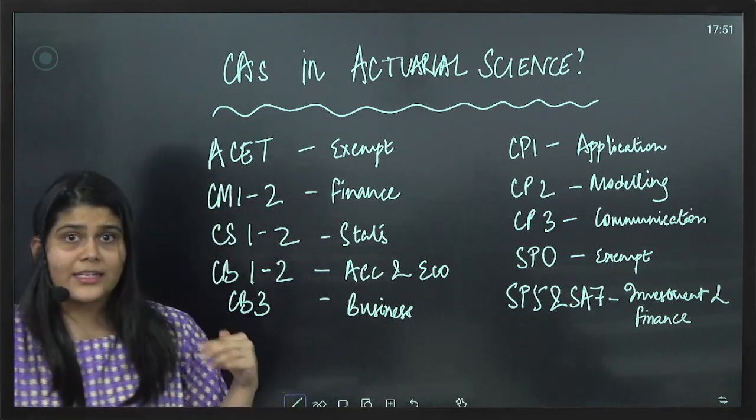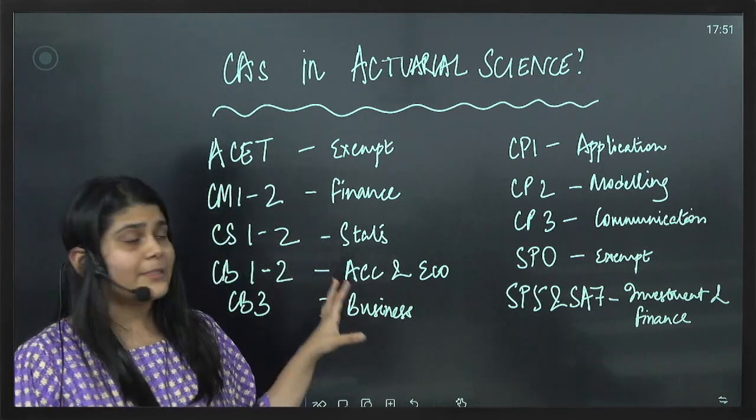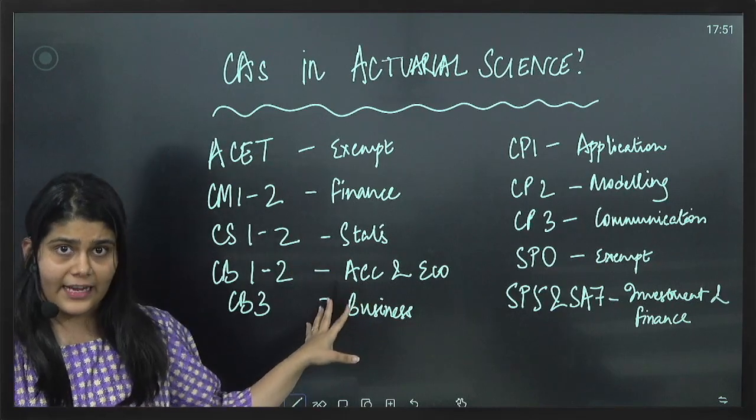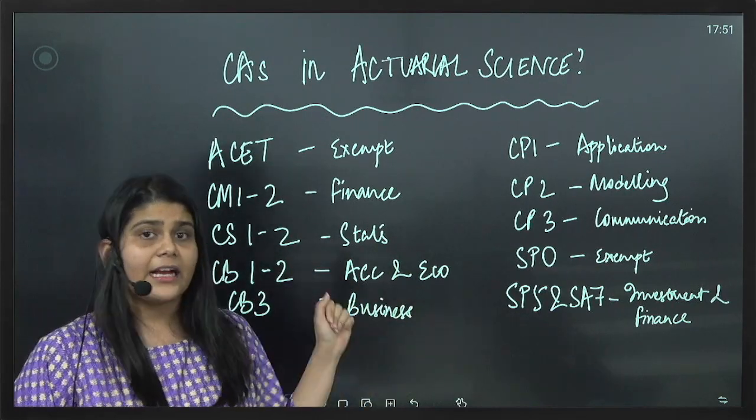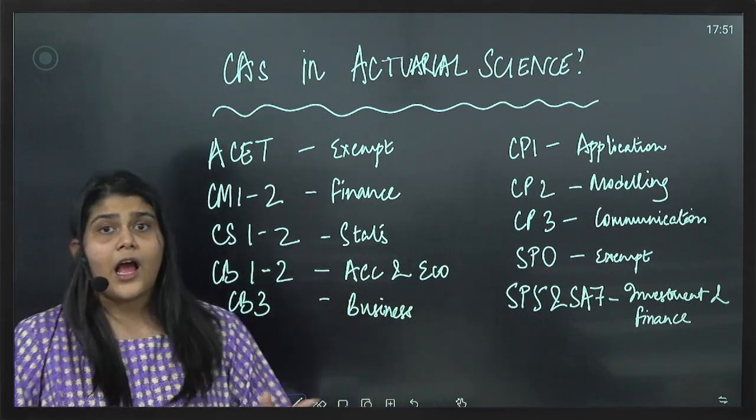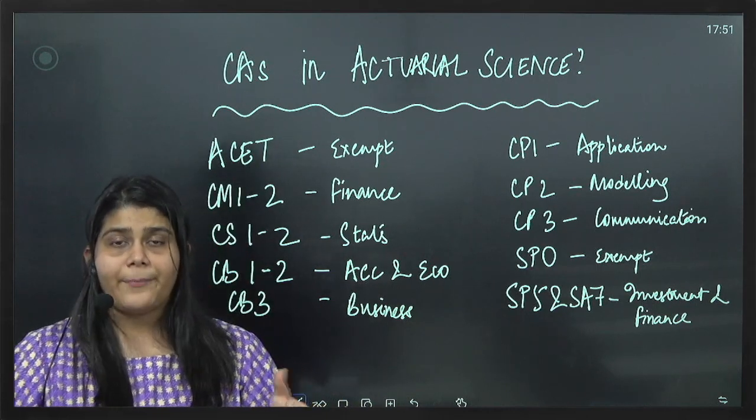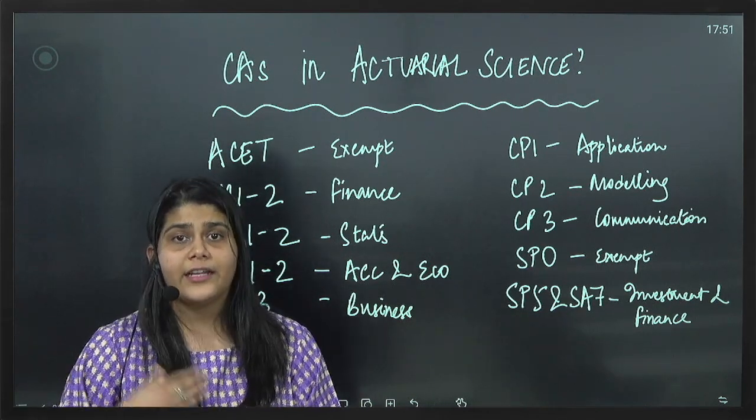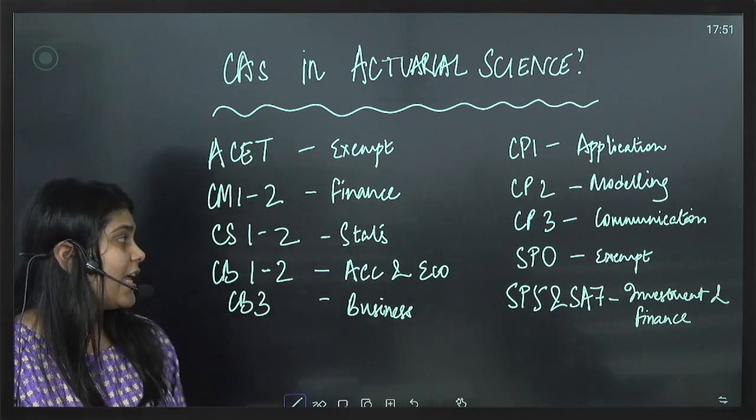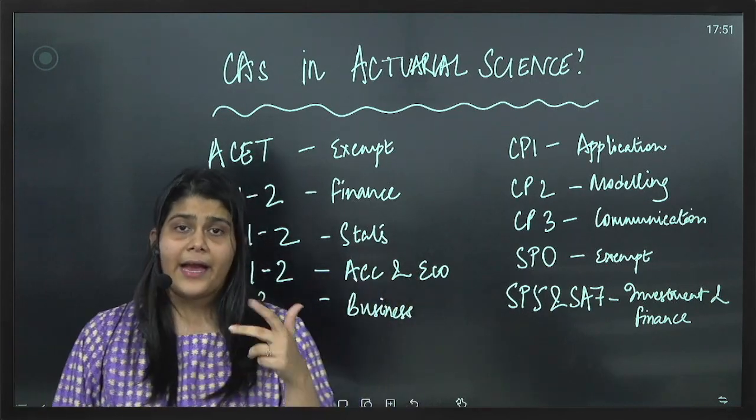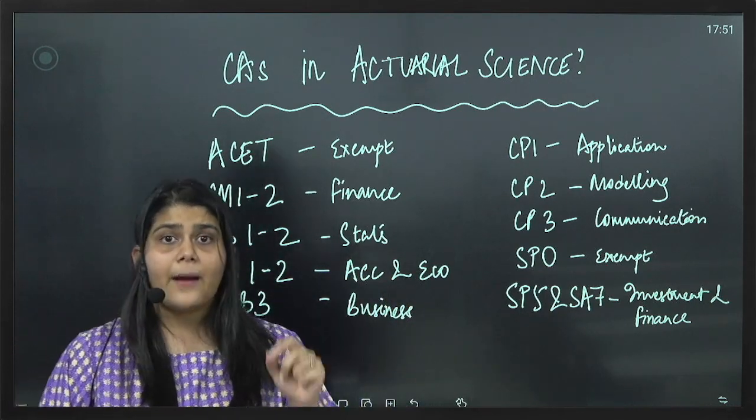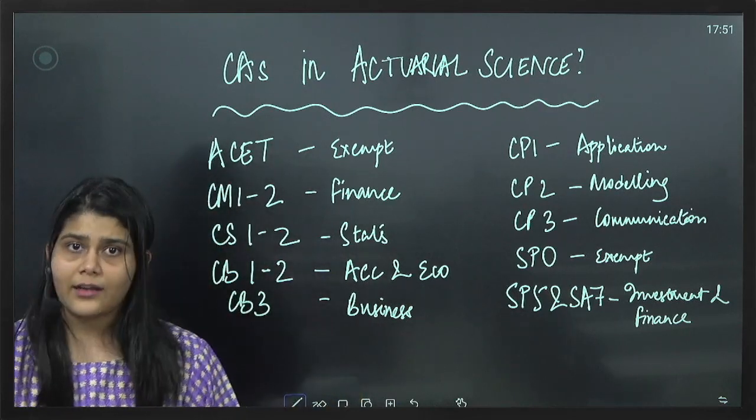CB1, CB2 is business accounts or business finance and business economics. Again business finance, major portion of the paper is something that we have already covered in our Chartered Accountancy course. Business economics also, micro and macroeconomics main portions are covered in our curriculum.